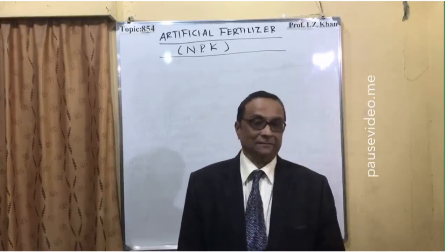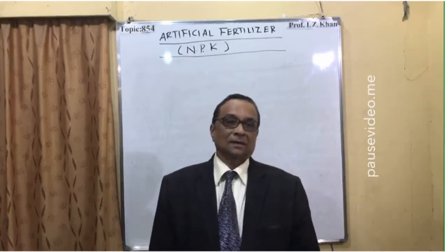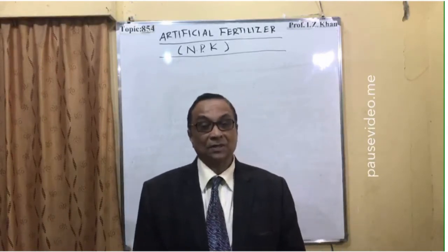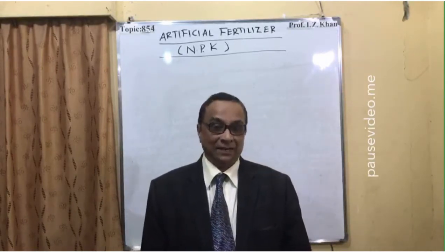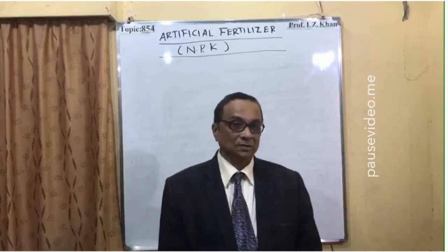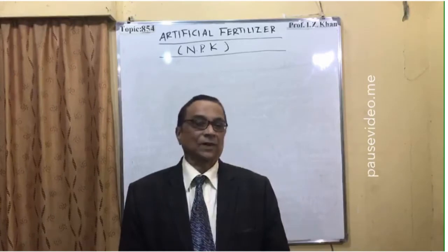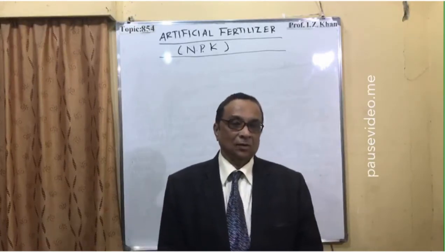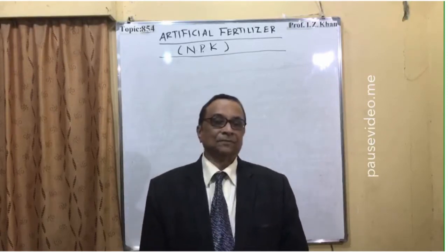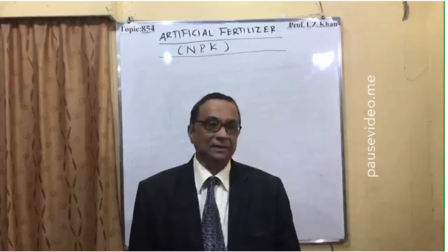This artificial fertilizer mainly contains nitrogen, phosphorus, and potassium, and on the bag it is written NPK fertilizer. These are the nutrients of the plant. Nitrogen is for vegetative growth, green photosynthesis, and leaf growth. Phosphorus stands for healthy roots, and potassium is for the stem and for good shape and growth of seeds and fruits.